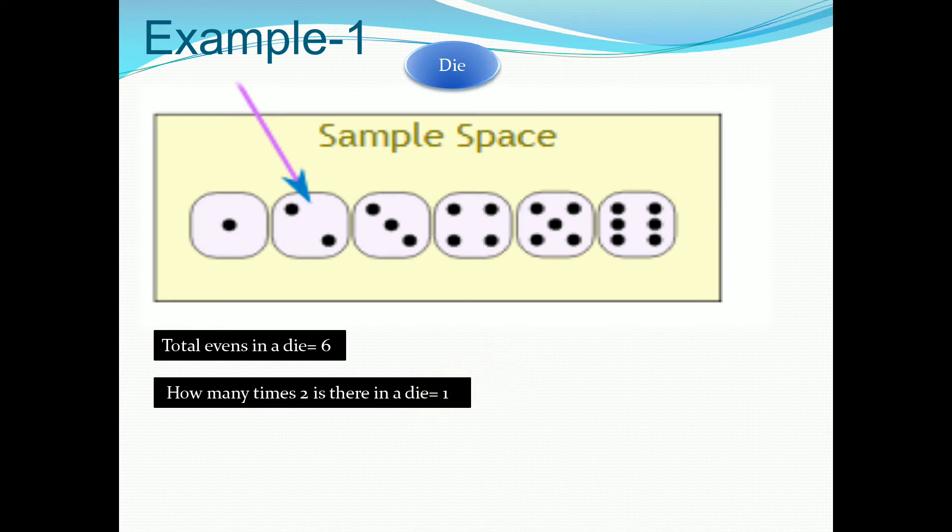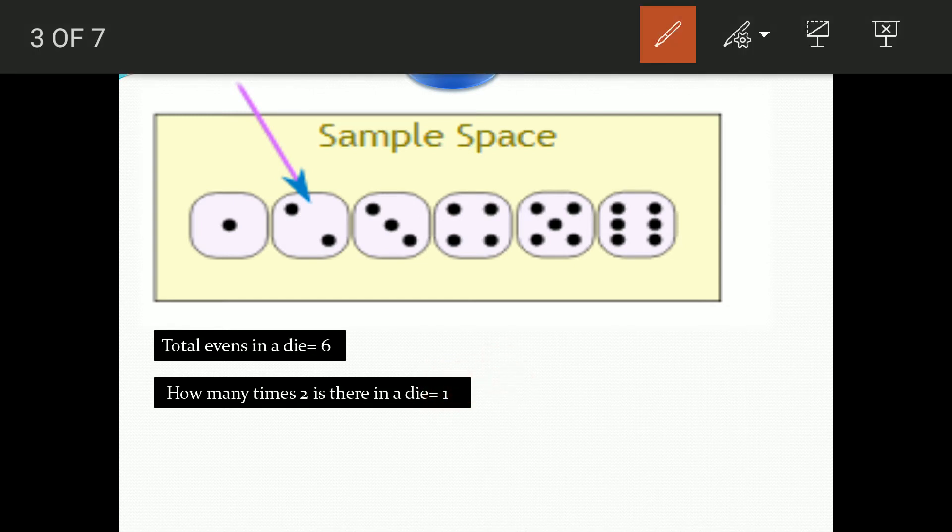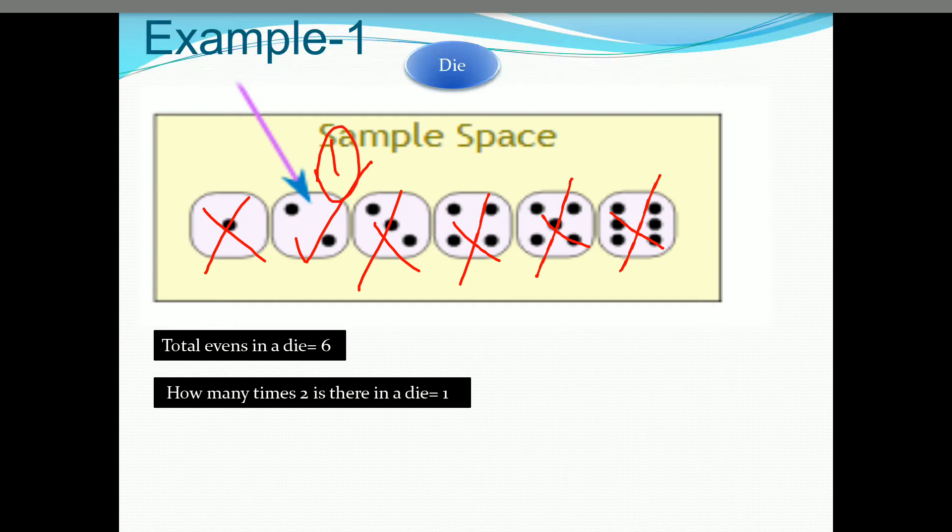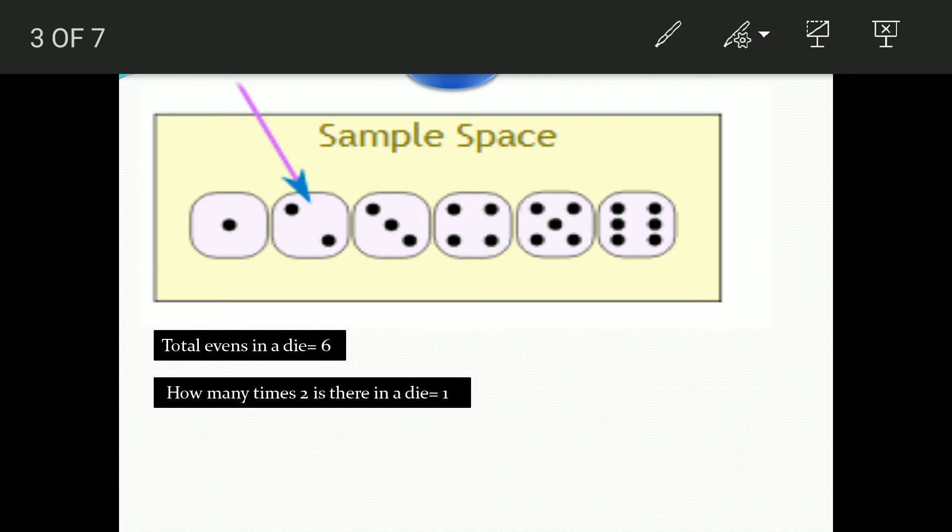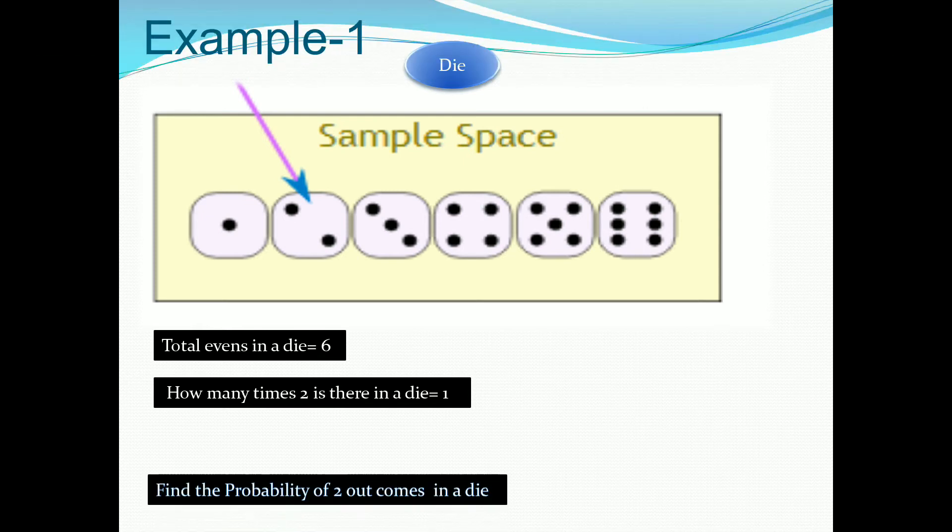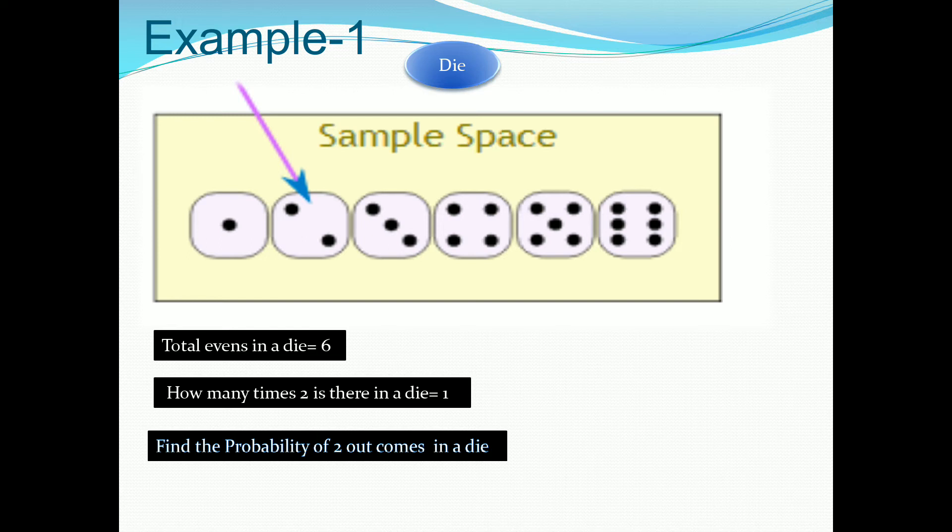Just see. 2 is there only 1 time. Remainings are other numbers. So how many times 2 is there? Only 1 time. Now, next, find the probability of 2 outcomes in a die.